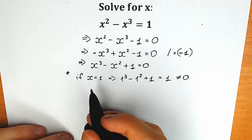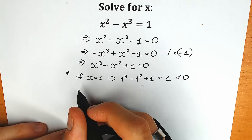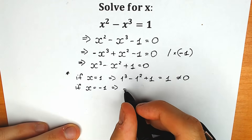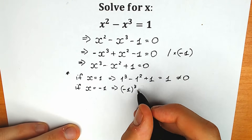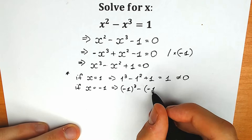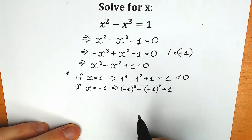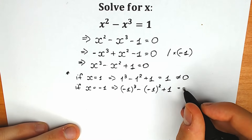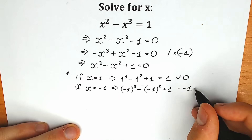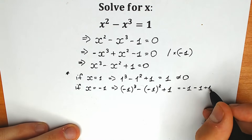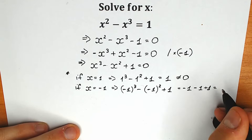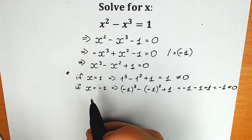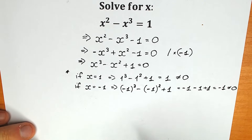Let's check x equal to minus 1. If x is equal to minus 1, we have minus 1 to the third power minus minus 1 to the second power plus 1. Minus 1 cubed equals minus 1, so we have minus 1 minus 1 plus 1, which equals minus 1. Minus 1 is not equal to 0, so we cannot solve this equation by inspection. Let's think about different methods.